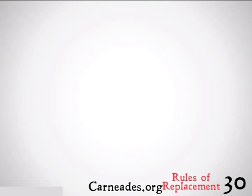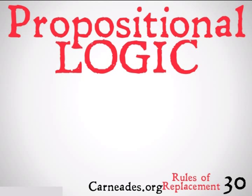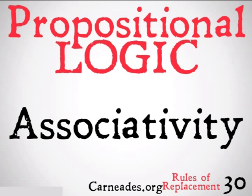Welcome back to 100 Days of Logic with 90 Second Philosophy and Carnades.org. Today we're going to be continuing with propositional logic, looking at associativity. As with commutativity, associativity is a property of mathematics as well as logic. If you remember back to your middle school math, you're going to be helped out here. Let's take a look at some examples.